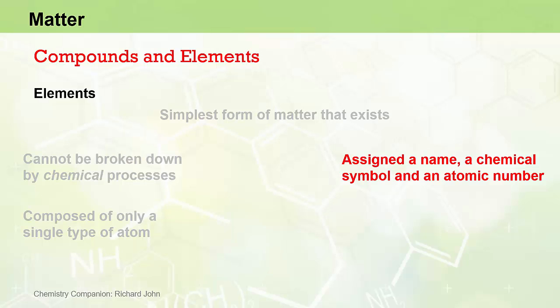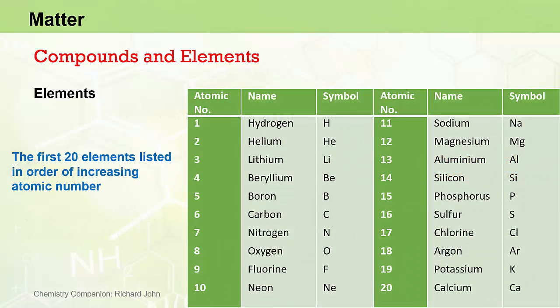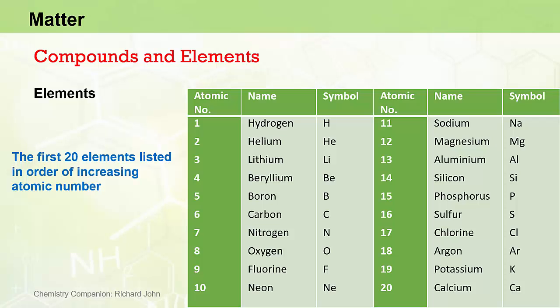Each element is assigned a name, a chemical symbol and an atomic number. This table shows the first 20 elements listed in order of increasing atomic number, starting with hydrogen at number one and calcium at number 20. As you can see, each element is given a number, a name and a chemical symbol.